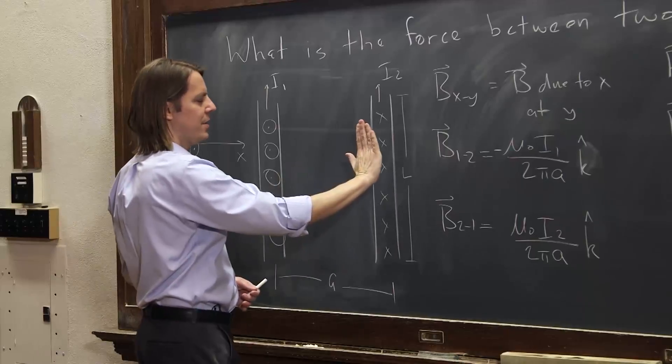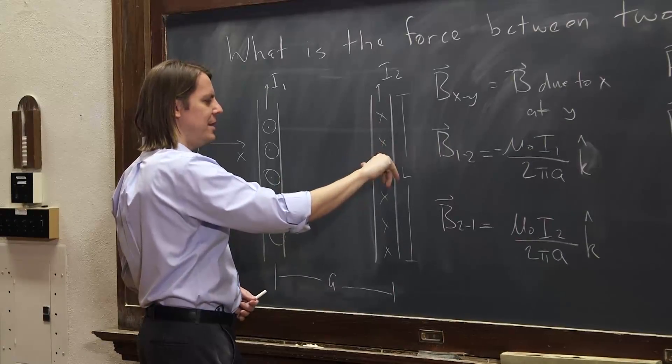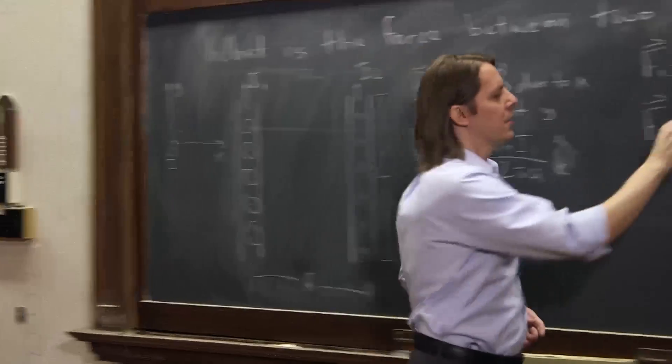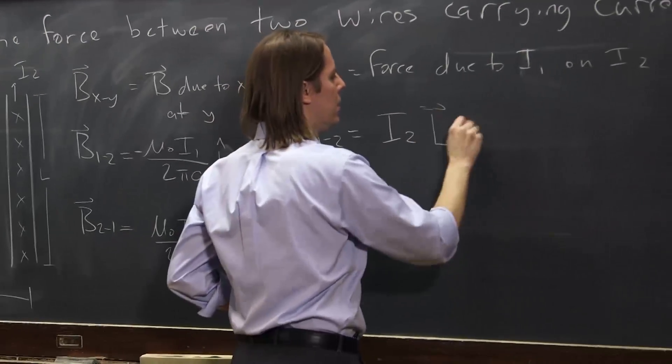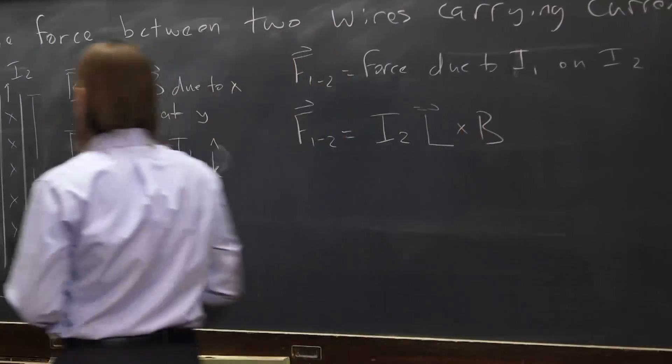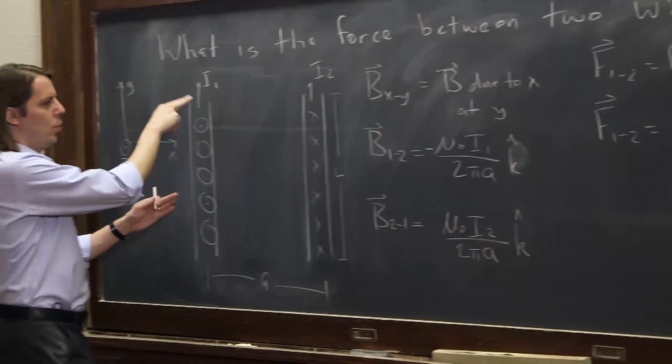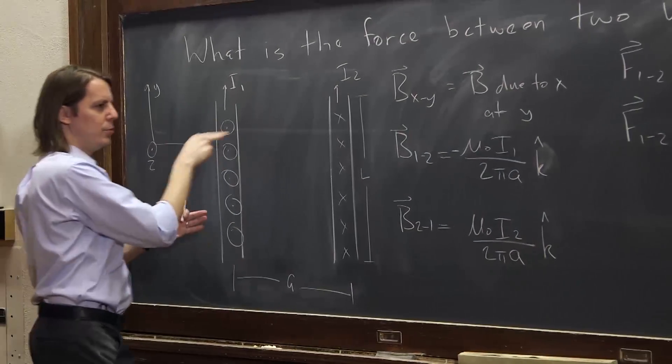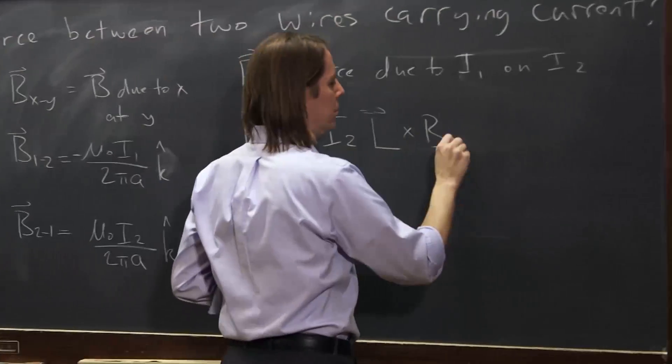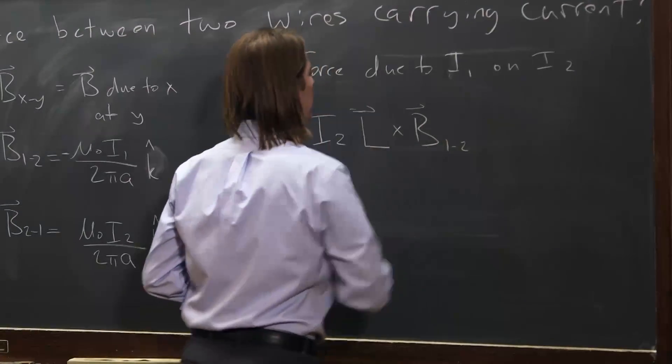So if we have this up crossed with B in, like that, now it's crossed with which one? It's crossed with B12, the magnetic field due to one, not two. So B12, like that.